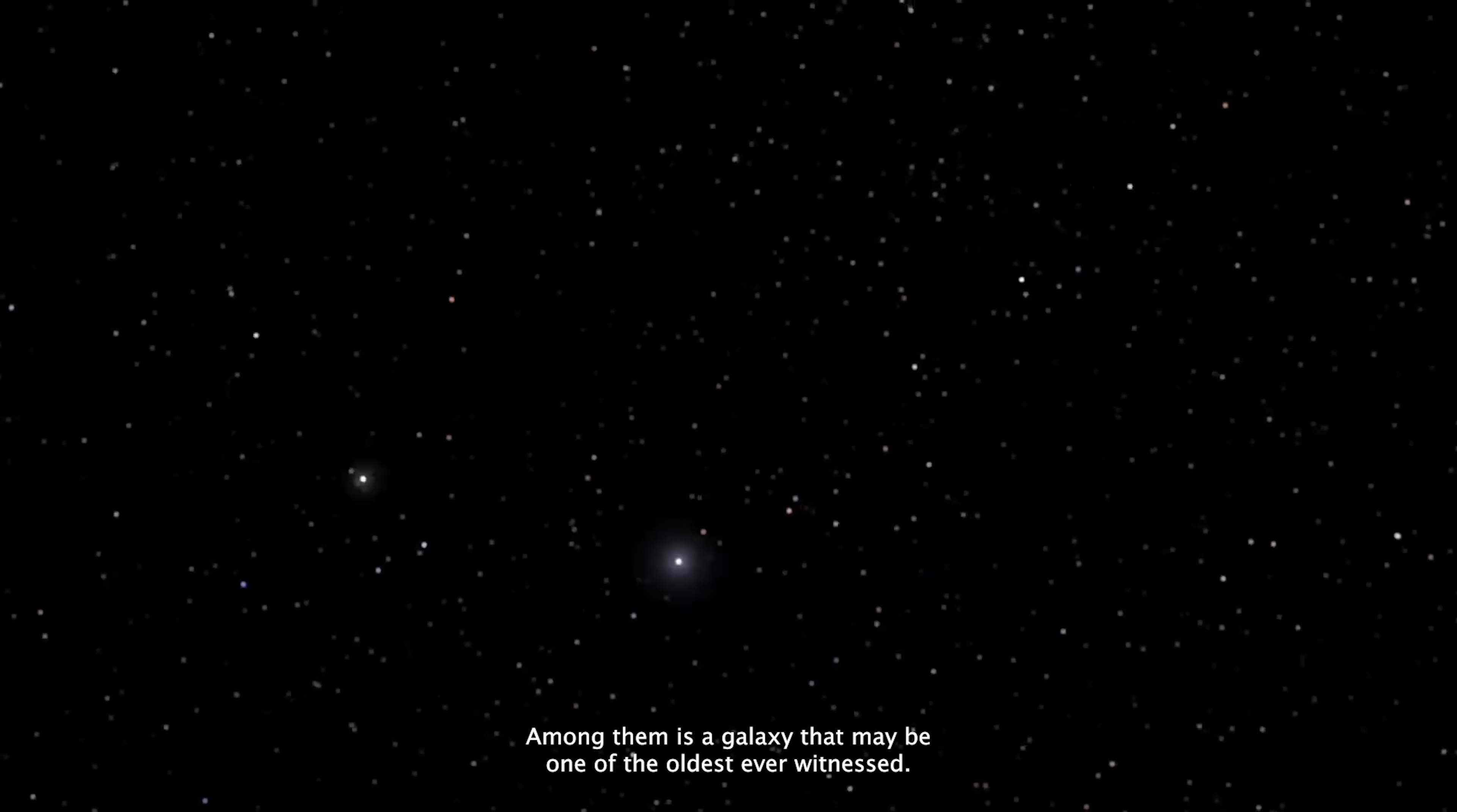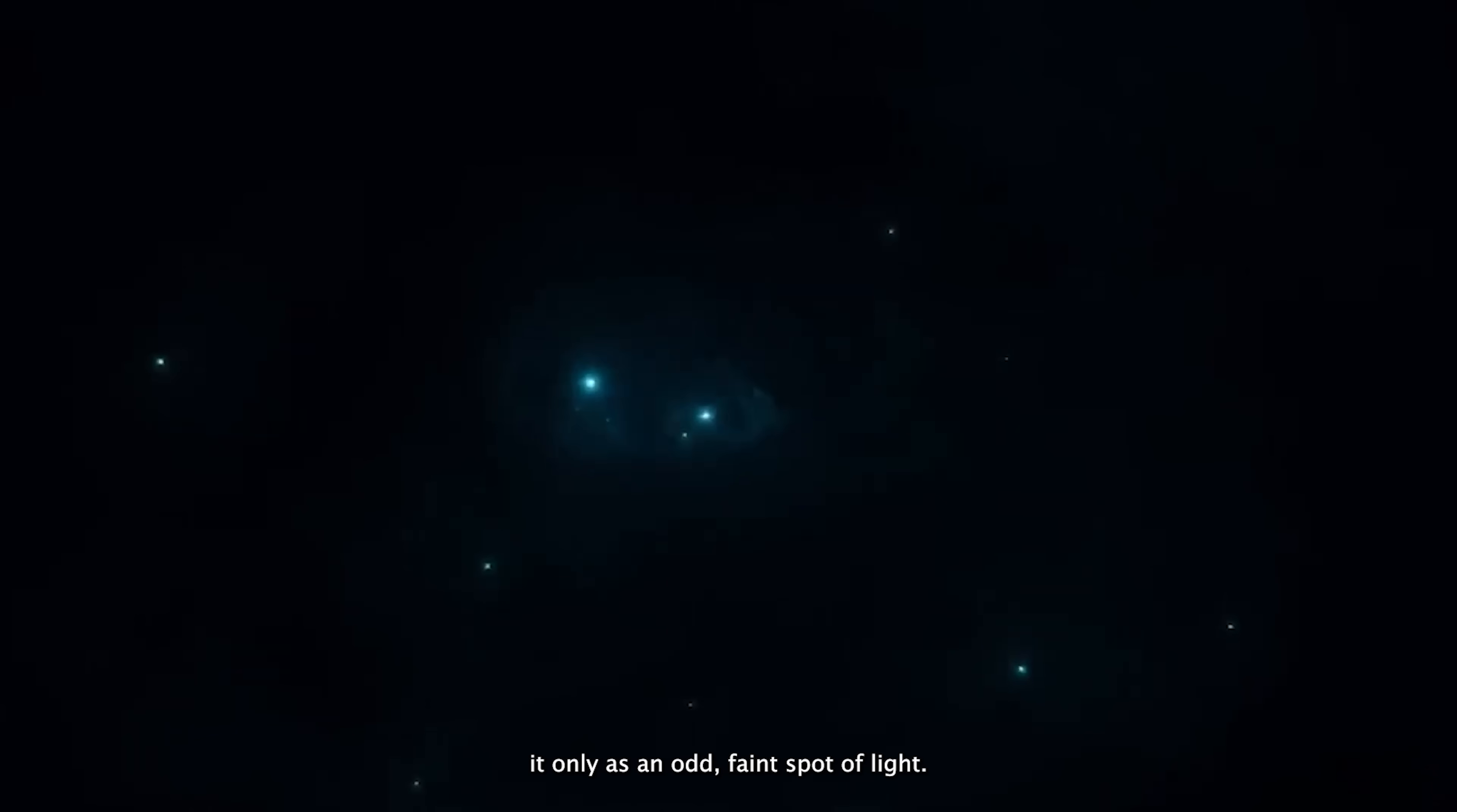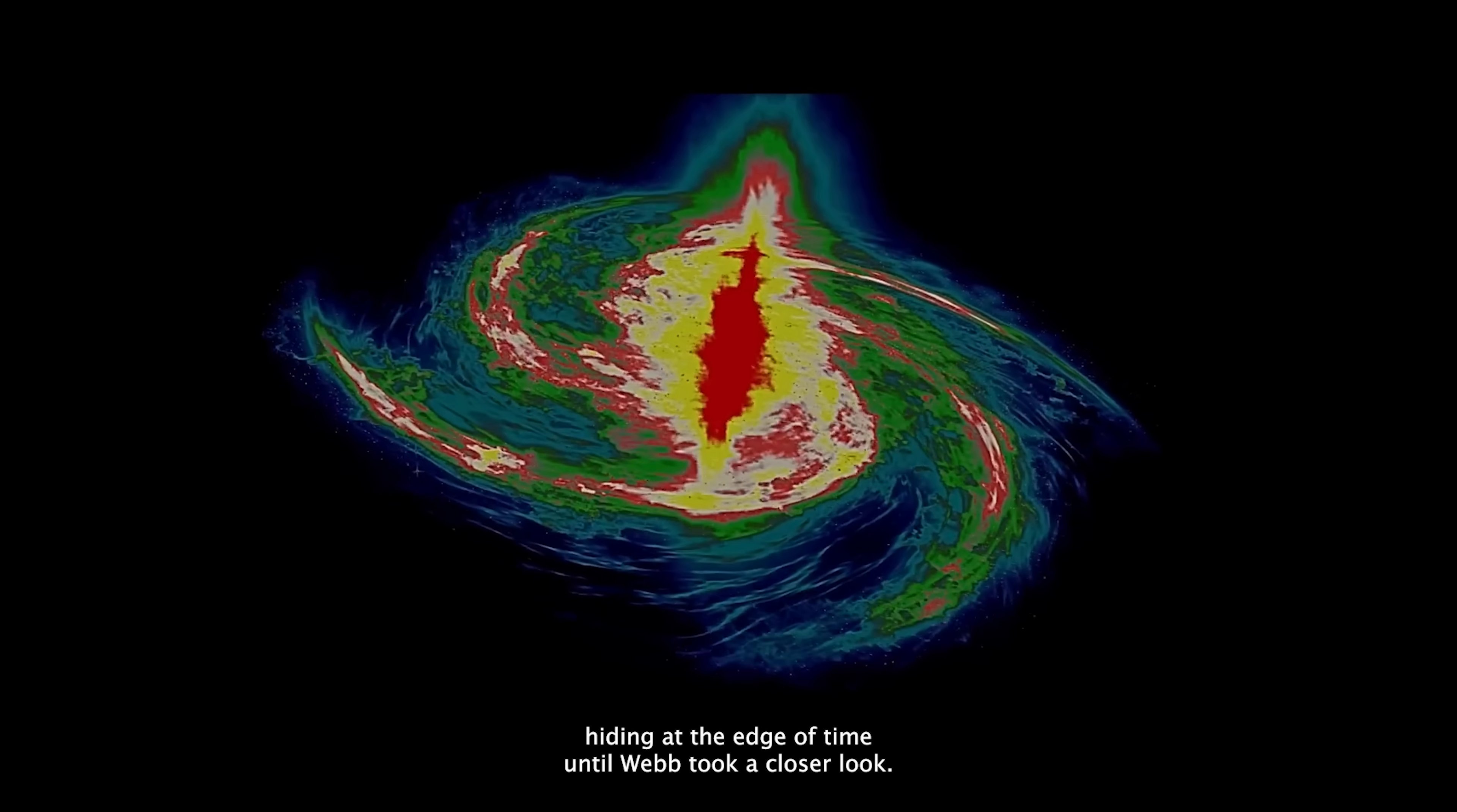Among them is a galaxy that may be one of the oldest ever witnessed. What's jaw-dropping is that this ancient structure already contains billions of stars. Even stranger, just two years earlier the Hubble Space Telescope had noticed it only as an odd, faint spot of light. No one imagined that this tiny blip was actually a cosmic Titan hiding at the edge of time, until Webb took a closer look.